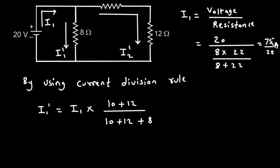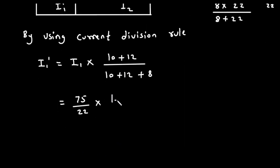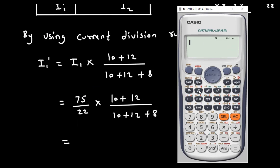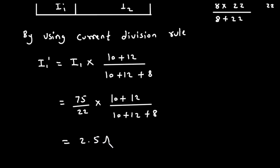Substituting this value, I1 prime equals (75/22) multiplied by (10 + 12) divided by (10 + 12 + 8), which equals 2.5 ampere.